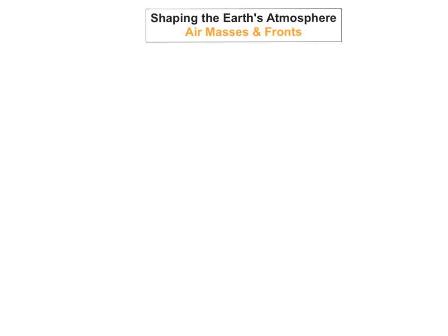So we're going to look at air masses and fronts. But the first thing we're going to look at is air masses. So what is an air mass? Well an air mass is a large body of air that has the same or very similar temperature, pressure and humidity levels throughout.